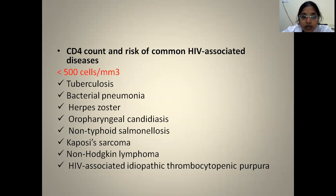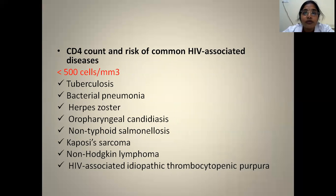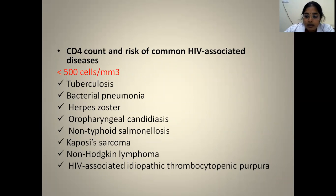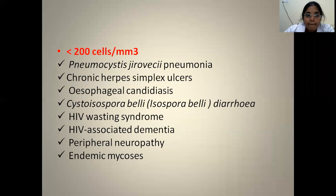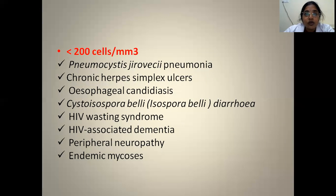Regarding CD4 count and risk of HIV-associated diseases: if the count drops below 500, diseases like tuberculosis, bacterial pneumonias, herpes zoster, oropharyngeal candidiasis, and Kaposi's sarcoma can be seen. If the count drops below 200, then PCP pneumonia, chronic herpes ulcers, esophageal candidiasis, chronic diarrheas, HIV wasting syndrome, and HIV-associated dementia can manifest.